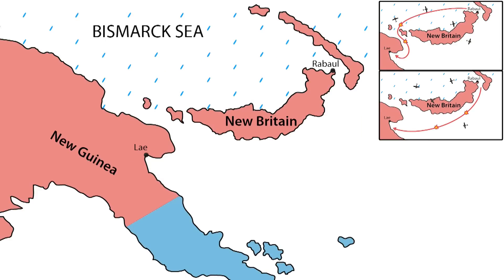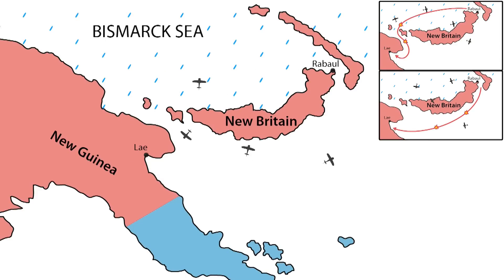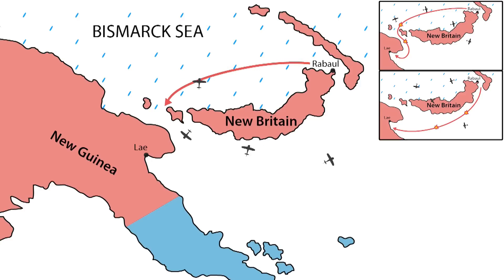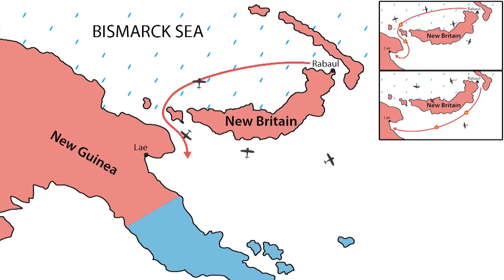The third scenario shows the main part of the U.S. Air Force south of the island and the Japanese Navy taking the northern route. Considering poor visibility north of the island plus limited reconnaissance, the convoy would be missed for two days, allowing for just one day of bombing.